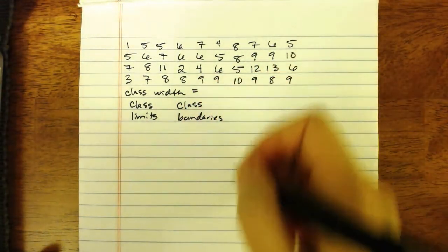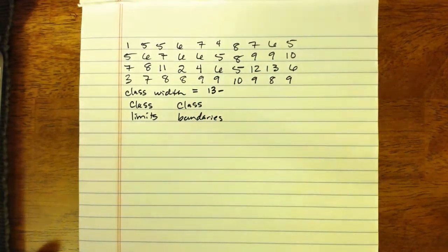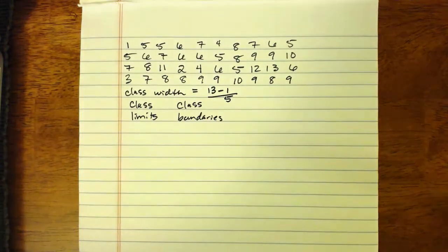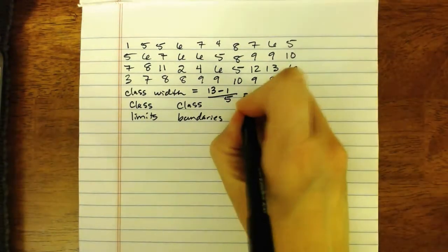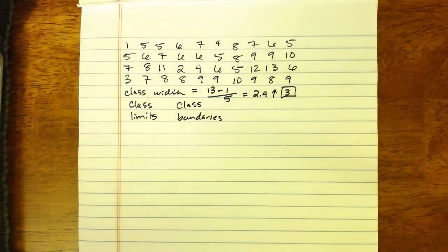So our class width, we take the maximum data value, which in this case is 13, minus the minimum data value, which was 1, and divide that by the desired number of classes, which say we were going to do five classes. So that gives us 2.4, which we then round up to 3 for our class width.